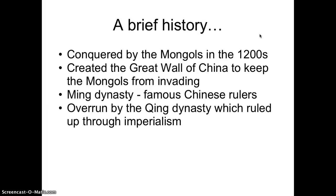China was conquered by the Mongols in the 1200s. The Great Wall of China — the only man-made structure visible from space — was created to try to keep the Mongols out. When the speaker visited the Great Wall, what was most impressive was not the height but the placement through rigorous mountain terrain, making it difficult for an army just to reach the wall, let alone get over it while soldiers were defending and shooting arrows from the top. It's a very impressive structure.